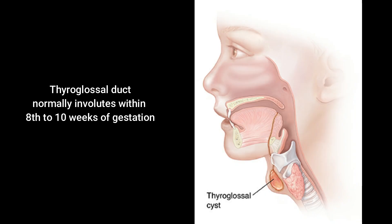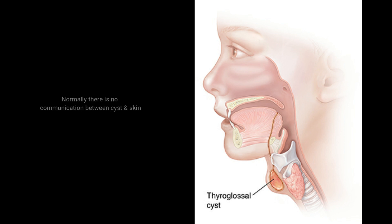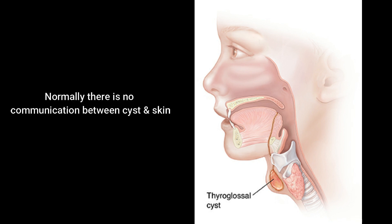But if any portion of the duct persists, secretion from the epithelial lining may give rise to a cyst. Embryologically, there exists no communication of thyroglosal cyst with the skin surface of the neck. That's why congenital thyroglosal fistula is never seen.